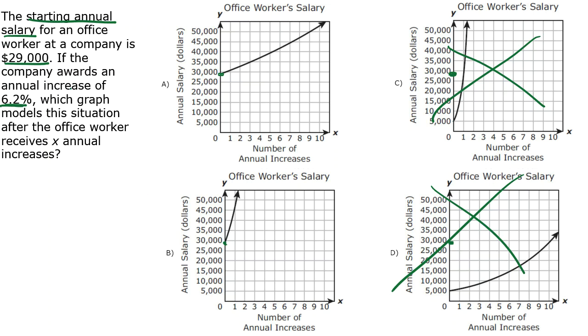The next part says that the company awards an annual increase of 6.2%. That part's a little trickier. There are a couple ways we could go about working this problem.